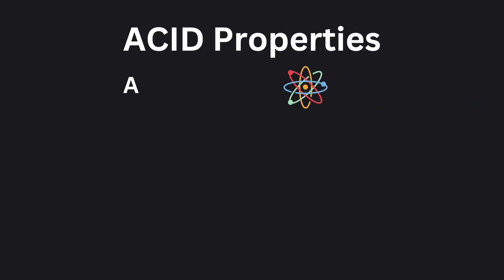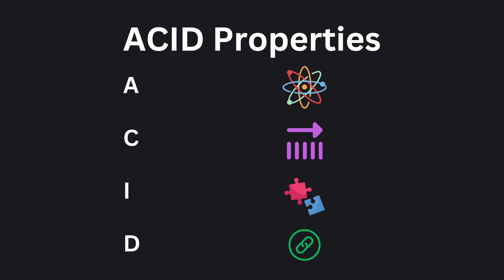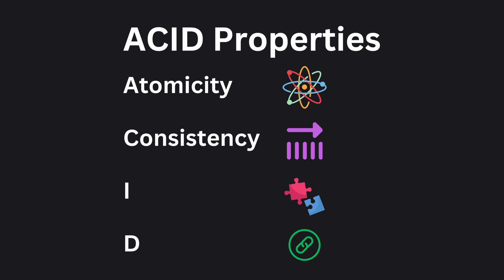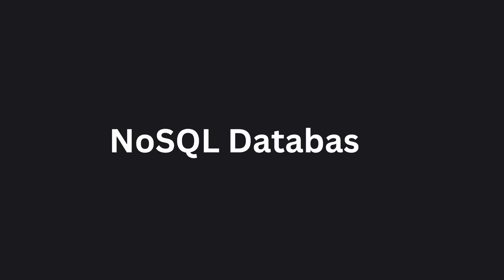Relational databases are also ACID compliant, meaning they maintain the ACID properties. A stands for atomicity, which means that transactions are all or nothing. C stands for consistency, which means that after a transaction your database should be in a consistent state. I is isolation, which means that transactions should be independent. And D is for durability, which means that once a transaction is committed, the data is there to stay.